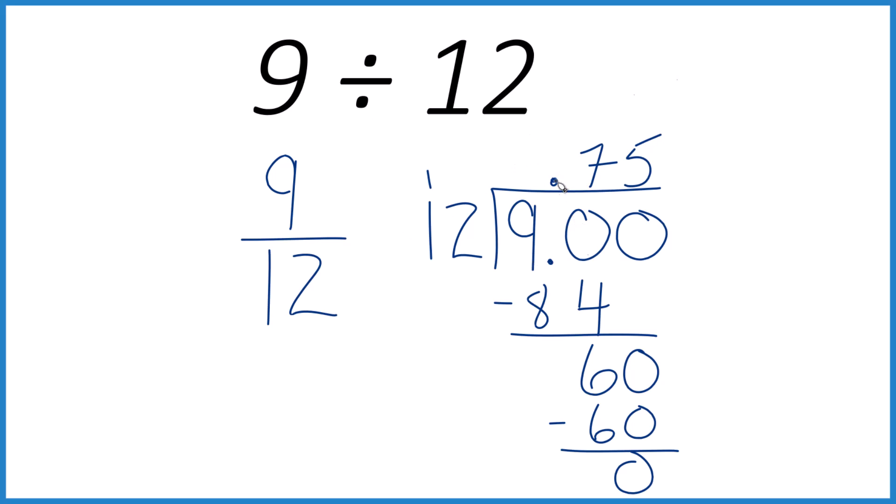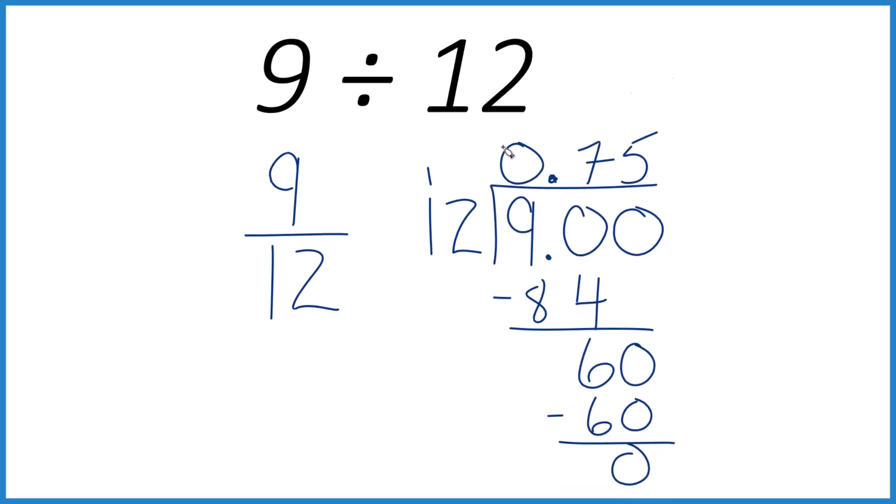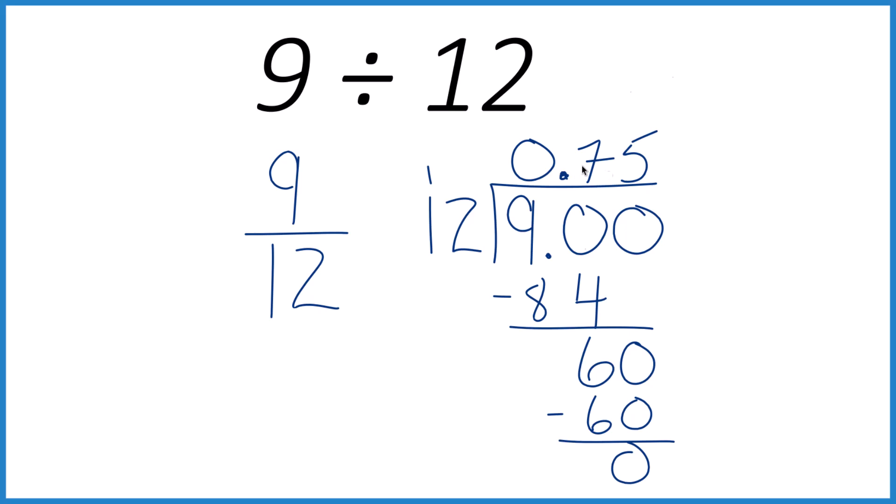So 9 divided by 12 is 0.75. Or put a 0 here so we don't forget about this. 0.75. If you multiply 0.75 times 12, you'll get 9.